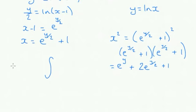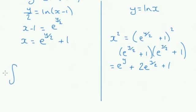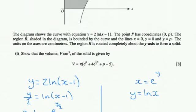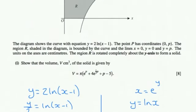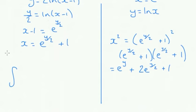So that's what we're going to integrate. So we are integrating, and like I said earlier, we need to times by pi as well, because it's a volume of revolution. So pi times e to the y, plus 2 e to the y over 2, plus 1.